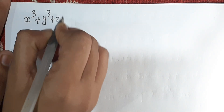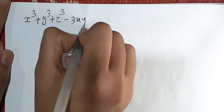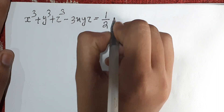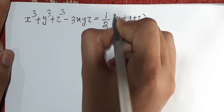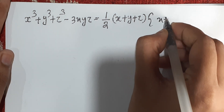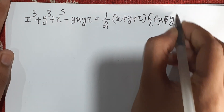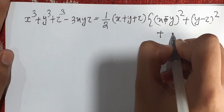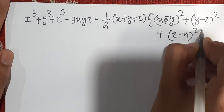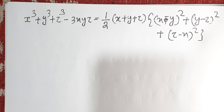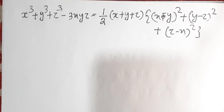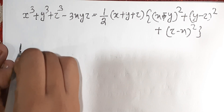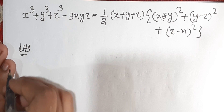Next question. That is, prove: x cube plus y cube plus z cube minus 3xyz is equal to one by two into x plus y plus z into x minus y whole square plus y minus z whole square plus z minus x whole square. Let's prove, taking LHS.